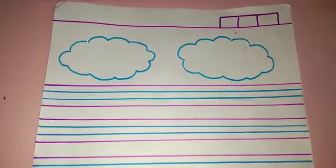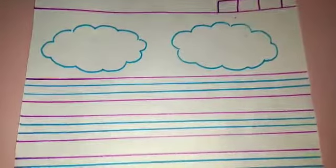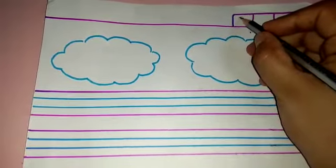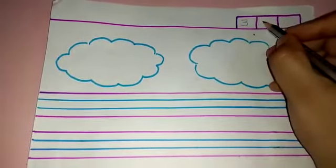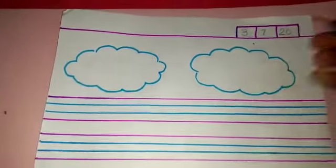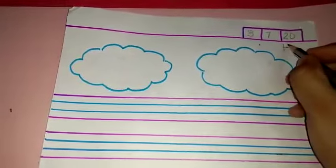So now I request the parents to set the notebook of your child like this. First put date here. Today's date is 3rd July 2020. Write H.W. here.